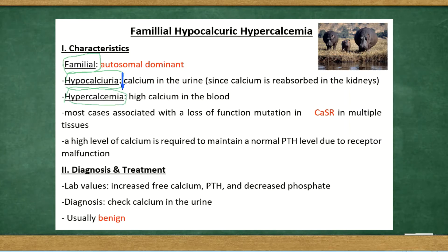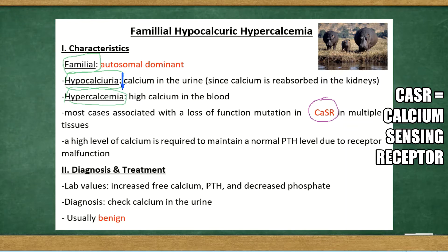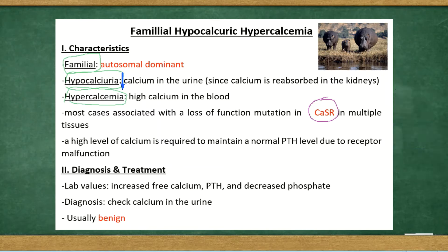Most cases of this condition are associated with a loss of function mutation in CASR, the calcium sensing receptor. This receptor is found on multiple tissues, such as the parathyroid gland and the kidney — we want to focus on the parathyroid gland. Normally, when there are high levels of calcium in the body, it signals the calcium sensing receptor and tells the parathyroid gland to decrease the amount of PTH, parathyroid hormone.